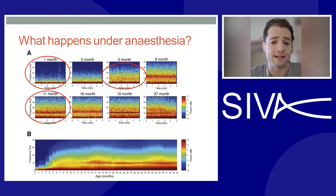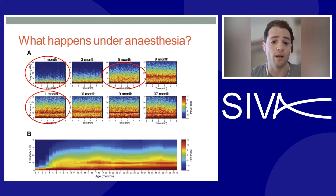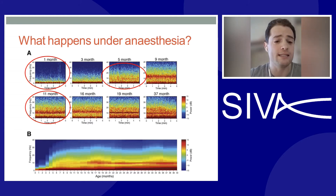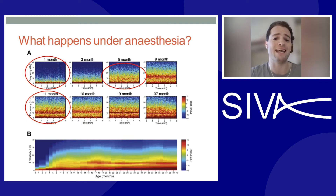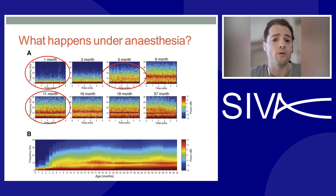Are those changes mirrored under anaesthesia? Yes they are. This study from Carl Lielsen demonstrates the changes that occur in a paediatric EEG under anaesthesia. Drawing attention to the three red circles: the first, at the age of one month, demonstrates the lack of activity in any recognisable frequencies. There's no alpha, beta, or theta activity — mainly just slow oscillations, that is activity below the delta band. It's not until about five months that we start to see power emerging in the theta and alpha bands, and not until about eleven months that we see the more stereotypical EEG appearance under anaesthesia.